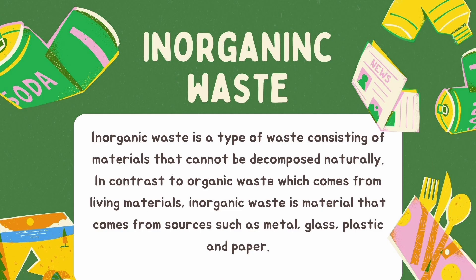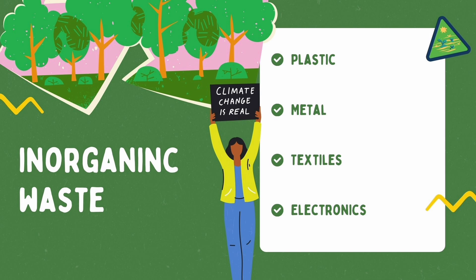Now let us see how we can treat inorganic waste. Inorganic waste is a type of waste consisting of materials that cannot be decomposed naturally or easily, in contrast to organic waste which comes from living materials. Inorganic waste comes from sources such as metal, glass, plastic and paper, which makes it really difficult to degrade. Examples of inorganic waste include plastic, metals, textiles and electronics, which includes gadgets that are not in use or are out of service.